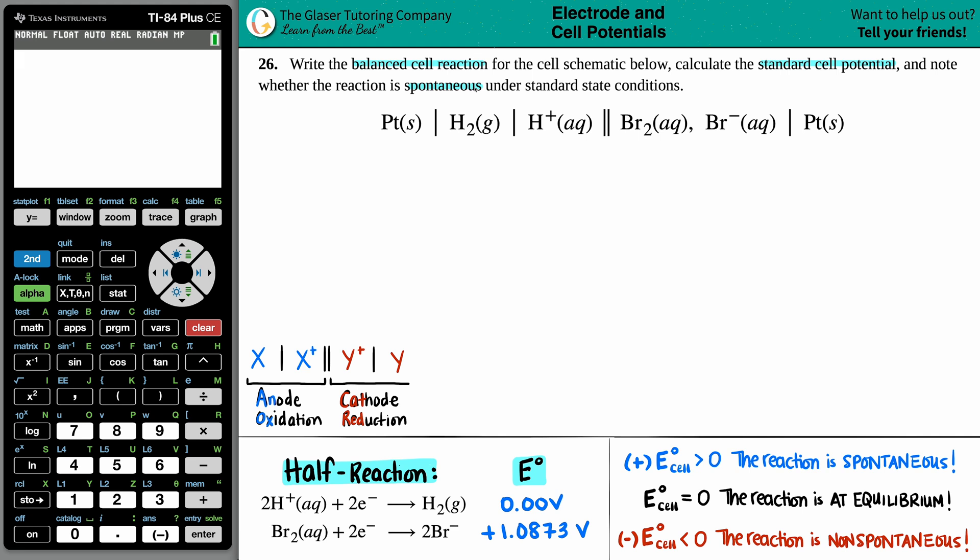Okay, so we have the cell schematic. This is basically the same as a cell diagram. Just remember how we interpret this: if we look at our diagram here, the anode is always mentioned first. That's always oxidation. And the cathode is always mentioned last. That's reduction.